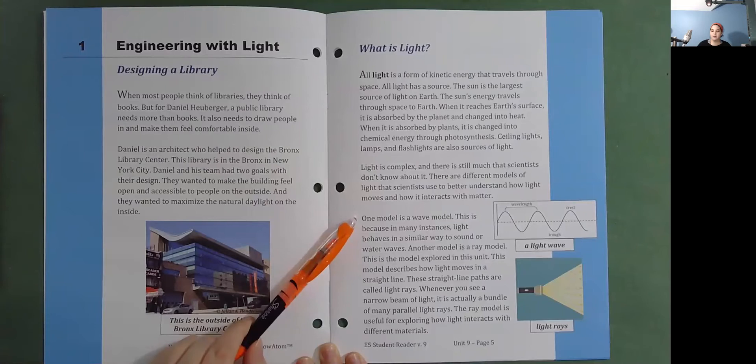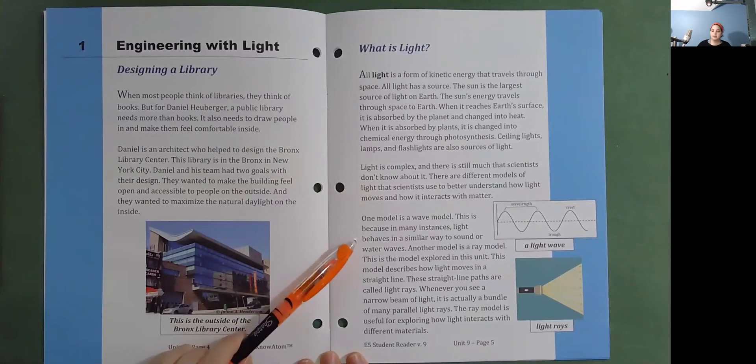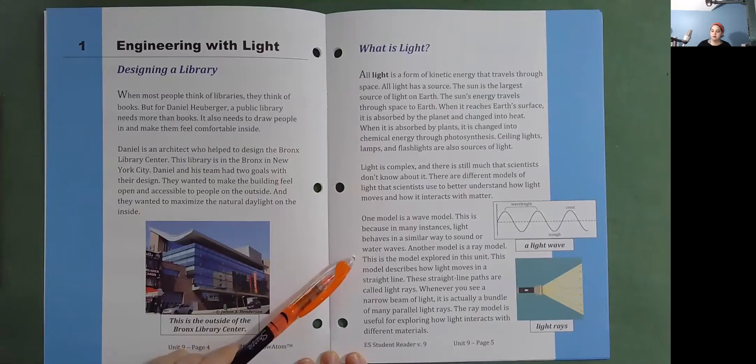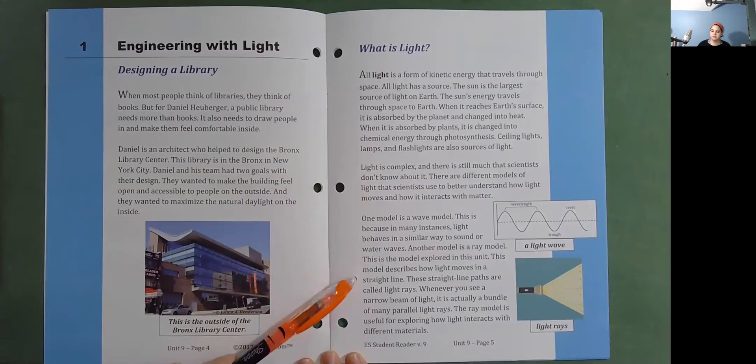One model is a wave model. This is because in many instances, light behaves in a similar way to sound or water waves. Another model is a ray model. This is the model explored in this unit. This model describes how light moves in a straight line.